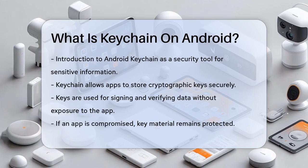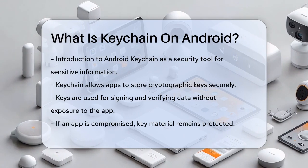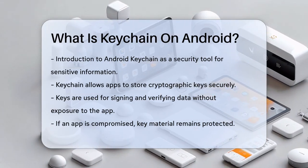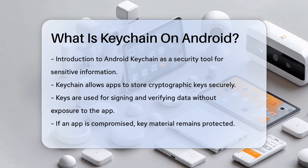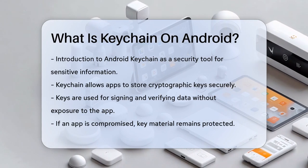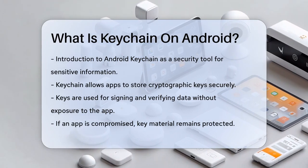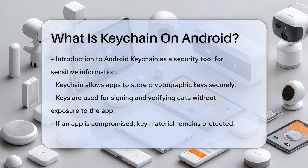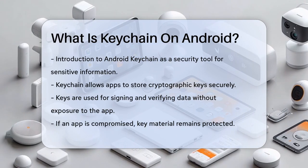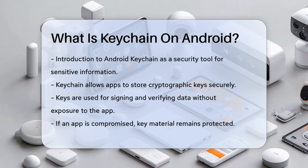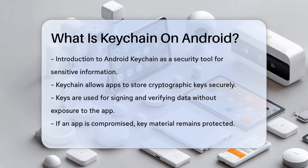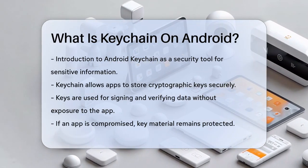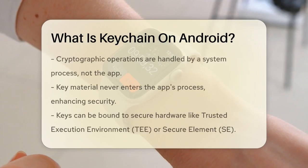The Android Keychain is a system that allows apps to store cryptographic keys securely. These keys are used for various cryptographic operations like signing and verifying data, but they are never exposed to the app itself. This means that even if an app is compromised, the attacker can't extract the key material from the device.